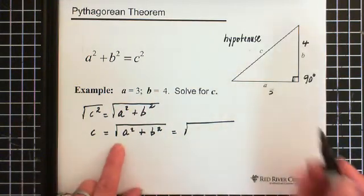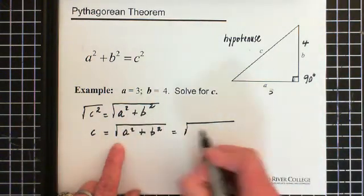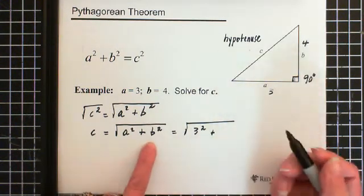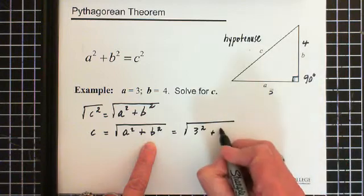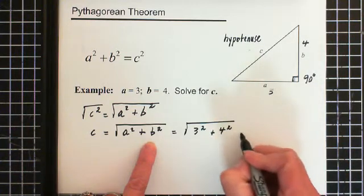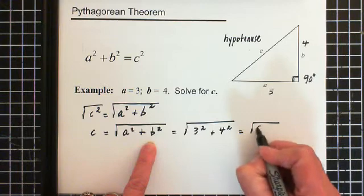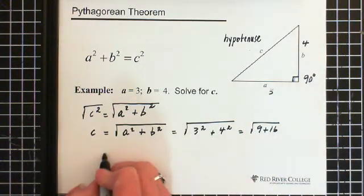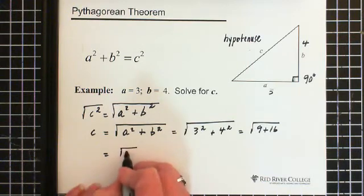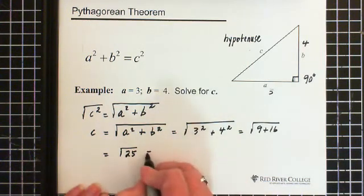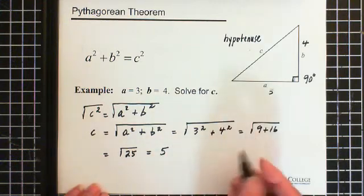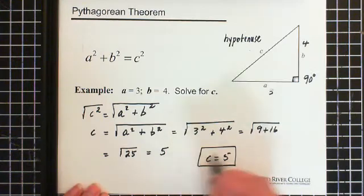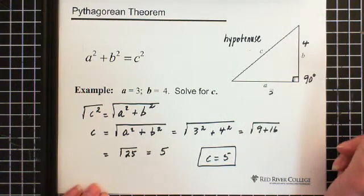So A is 3, so we have 3 squared, plus B, which is 4, so we have 4 squared, which equals the square root of 9 plus 16, which equals the square root of 25. And the square root of 25 is 5. Therefore, C equals 5. So we have solved for the hypotenuse of this triangle.